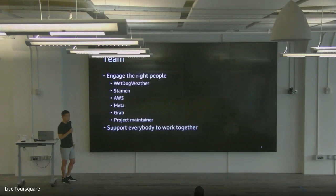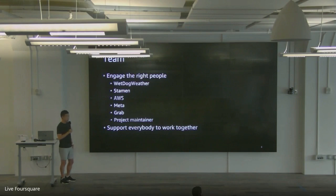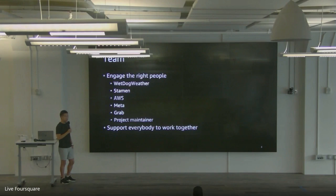White Dog Weather is a startup that mostly did their own rendering projects. Statement is an agency we've worked with for a long time for our map styles. AWS is ourselves. Meta contributed one engineer who turned out to be our superstar — extremely strong. Grab is another company that invested a lot in this field, but they're in a different time zone, which was the biggest challenge. We talk to them every week but at very weird hours. Still, we got their engineers working on the layers we wanted them to update, and we also got support from community maintainers.